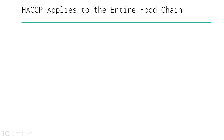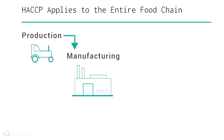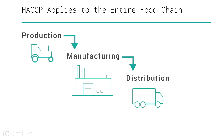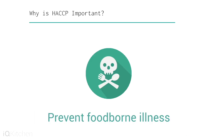HACCP is designed for use in the entire food industry from growing, processing, manufacturing, distributing, and retailing food for consumption. HACCP is important in order to prevent foodborne illness, but also to reduce recalls and help companies save money.